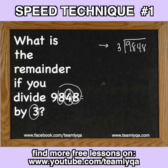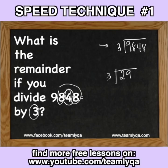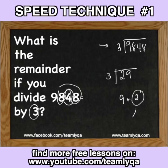Ano yung matitira kapag di-divide mo ito sa 3? So, pag di-divide ko siya sa 3, this is actually going to give you 9 and a remainder of 2. So, ibig sabihin nun, yung 2 na yan na natitira, yan na ngayon ang remainder ng buong number na ito. So, the answer here is 2.